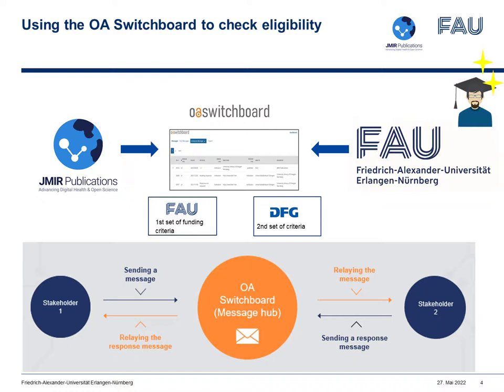What is happening now is that I can use the switchboard to turn these general eligibility criteria into concrete, actionable information for publishers through standardized messaging. Based on the article-level metadata that I receive from the publisher through the switchboard, I can make a decision — and even partially automate that decision — and then communicate this back to the publisher with a standardized response. They get a precise answer to whether this paper is fundable and how, coming from the best source: the librarian at the institution.